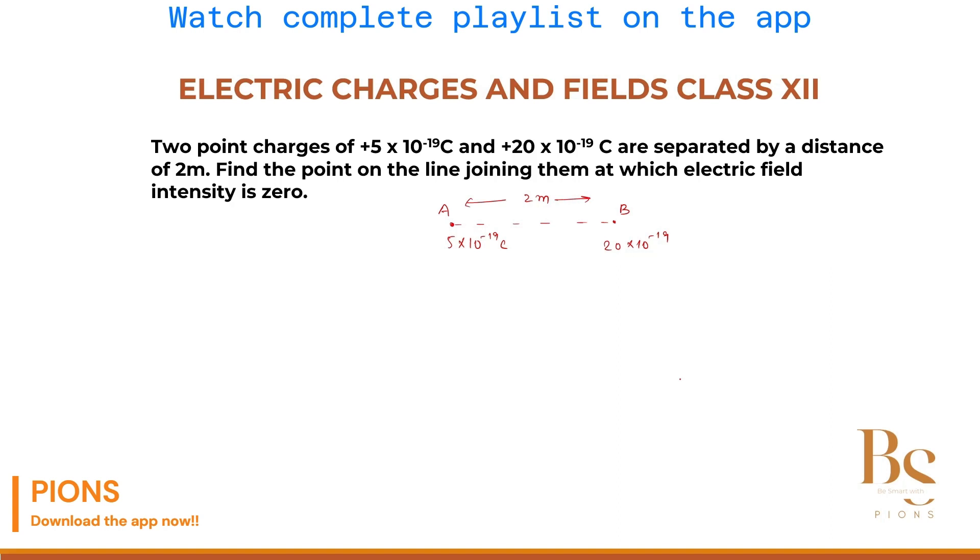Now at this point, you have to find a point where the field is zero. I don't know where it must be. So let's assume that this point is point P at which the electric field is zero, cancelling each other. Sir, why it is cancelling at P only? Why can't you cancel it here or here? We will see that within a minute.